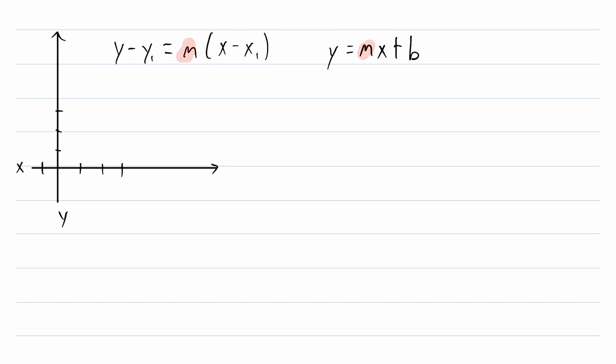Remember that m represents the slope of the line, x1 and y1 are the coordinates of any point on the line, and b is the y-intercept of the line. Point-slope form is a little bit easier, so we'll start with that.